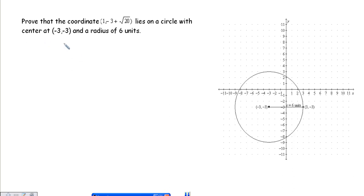All right, in this example we're going to prove that a point lies on the circle. Here I've graphed the circle that's described in the situation, but you wouldn't need to graph it to solve the problem.